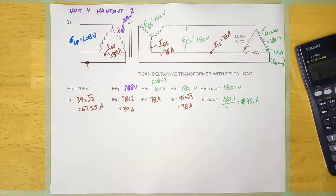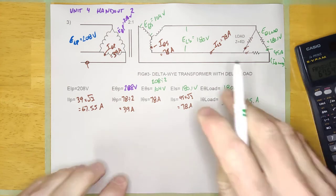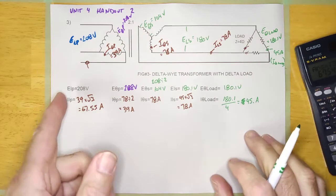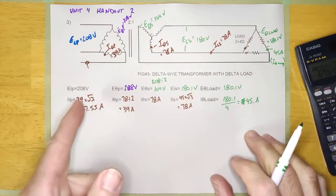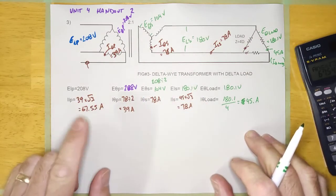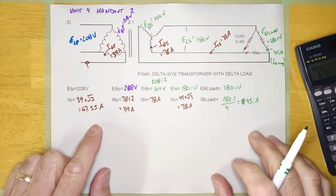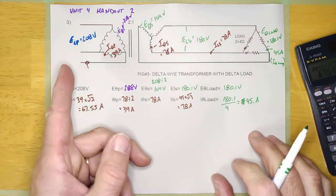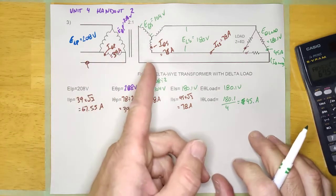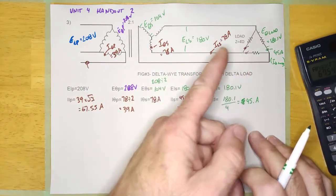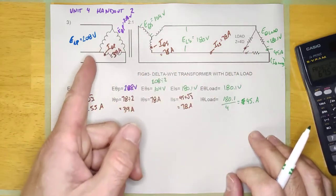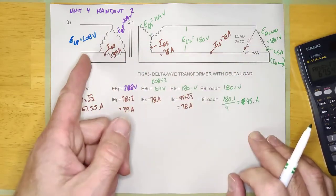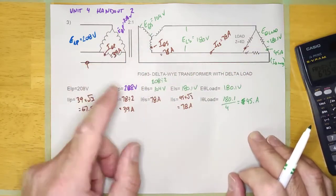Okay guys, welcome back. We've just done question number three. We're hoping we got it all right, but it's very possible that we messed up. And the way to check this is to calculate the VA everywhere on this circuit.